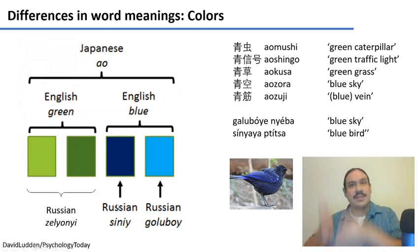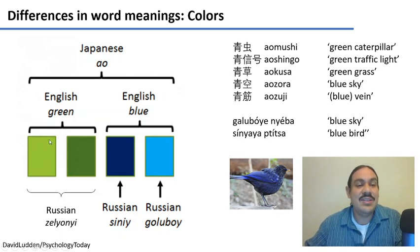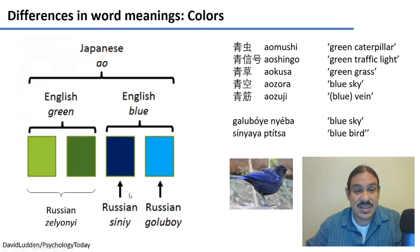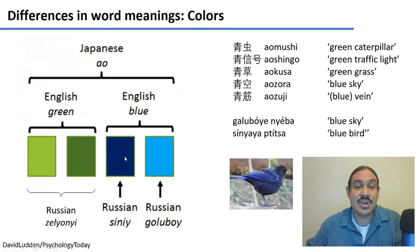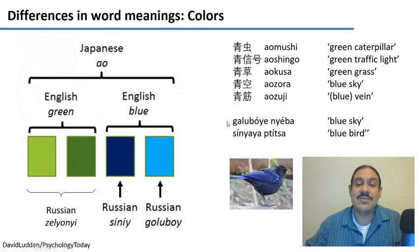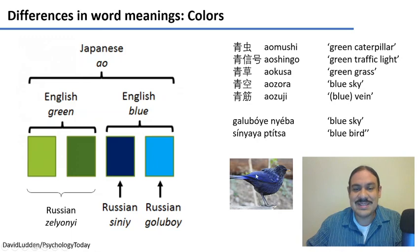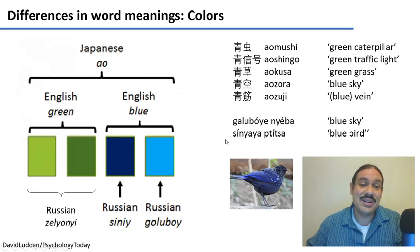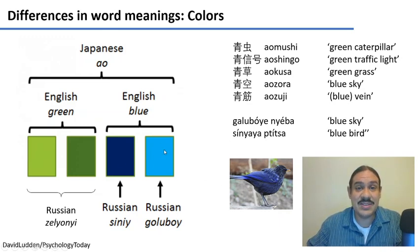In English we have green and blue, but Russian splits blue into two different and distinct colors: 'siniy,' which is the darker one, and 'goluboy,' which is the lighter one. So for example, 'goluboy neba' is a blue sky, and a darker-shaded bird would be 'sinyaya ptitsa' — a blue bird with a darker shade. These two are as distinct for Russian speakers as green and blue are distinct for us.